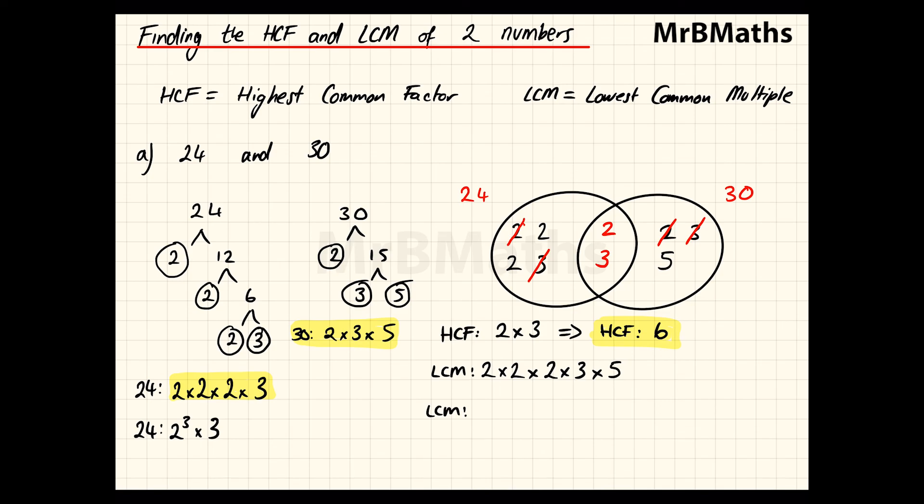2 × 2 = 4. I'll write it out step by step to make sure I'm doing it right, especially if you don't have a calculator. 4 × 2 = 8, 8 × 3 = 24, and 24 × 5 = 120. So the LCM of 24 and 30 is 120.